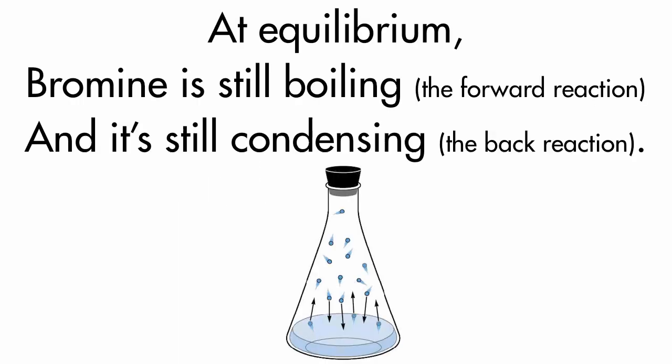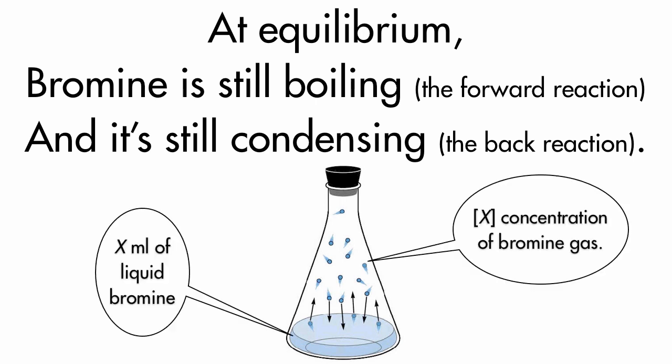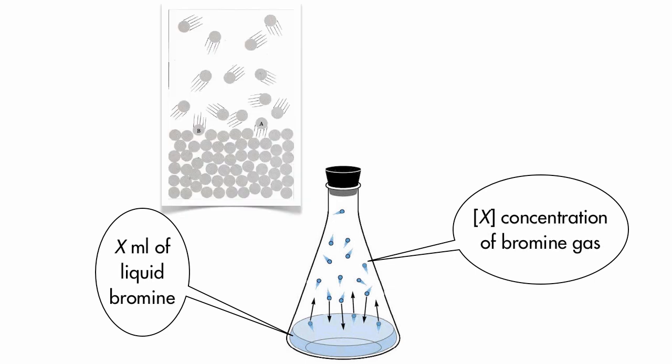Bromine is still boiling and it's still condensing. But we don't see it. In equilibrium, it looks like there's the same unchanging amount of liquid bromine and the same unchanging amount of bromine gas. But remember, even a milliliter of liquid has many, many, many, many atoms and molecules. And those atoms keep on reacting.